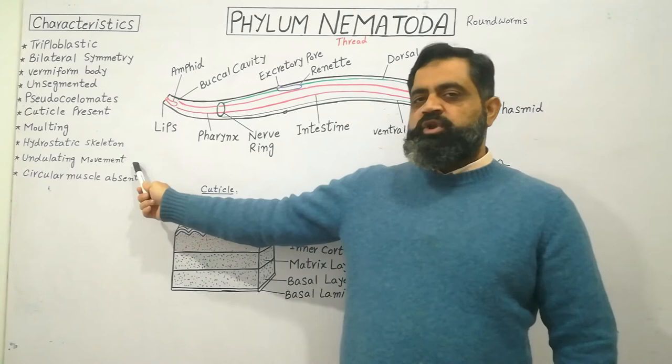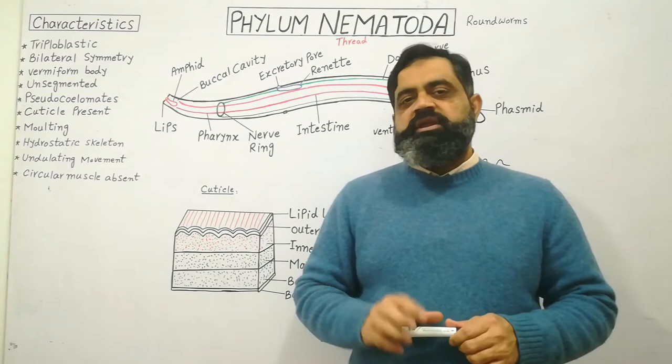They usually move by undulating wave movement, and they do not have circular muscles in their body, which we will discuss later in this lecture.